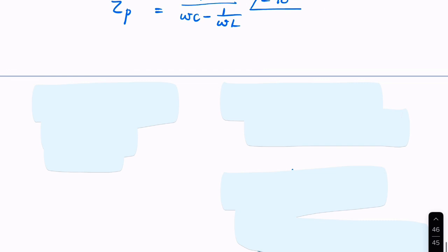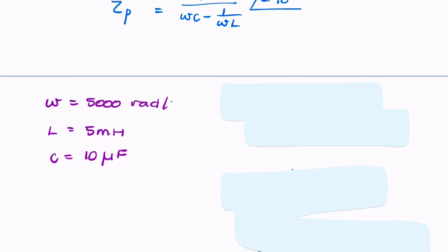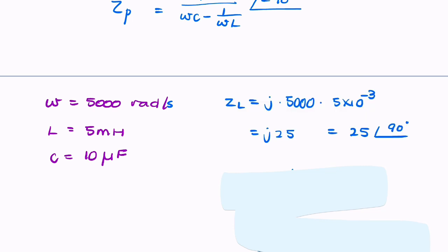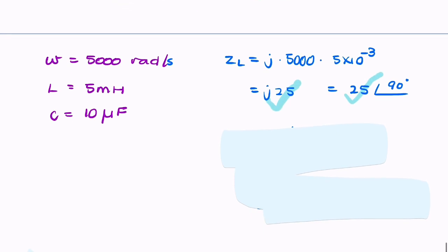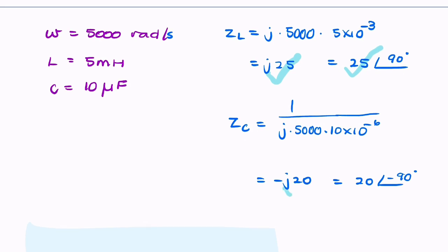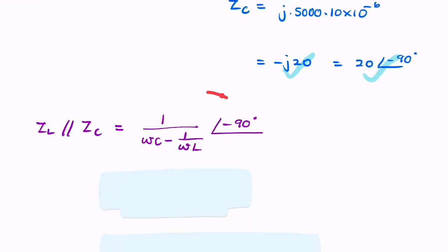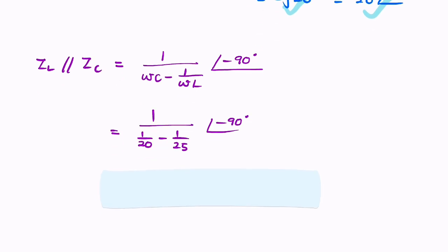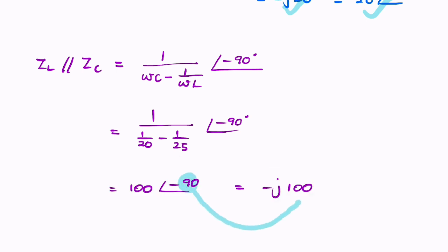In this particular example, we're given some numbers. We can plug those in to find Z_L in rectangular and polar coordinates, then do the same for Z_C, and then substitute both into the equation we just derived to get the result.